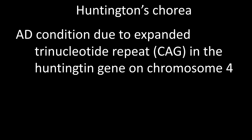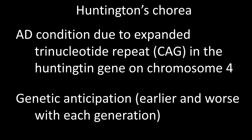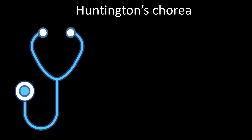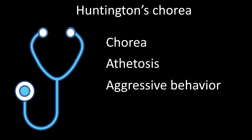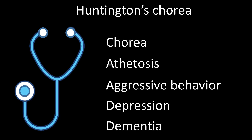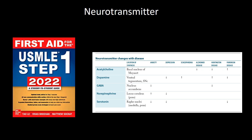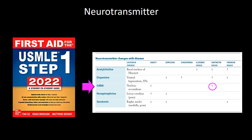Huntington's chorea is an autosomal dominant condition due to expanded trinucleotide repeats CAG in the Huntington gene on chromosome 4. Genetic anticipation is common, with manifestations occurring earlier and more pronounced with each passing generation. The clinical manifestations include chorea, athetosis, aggressivity, depression, and dementia. The neurotransmitter pattern in Huntington's disease includes decreased acetylcholine from the basal nucleus of Meynert, increased dopamine from the pars compacta of the substantia nigra, and decreased GABA from the nucleus accumbens.